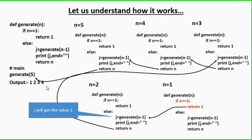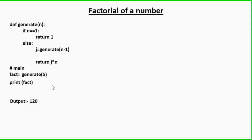If you assume it as a series of copies, it will be very easy to understand. Now we will take another example where the sample code is almost the same with certain changes, and we will calculate the factorial of a number using a recursive function.